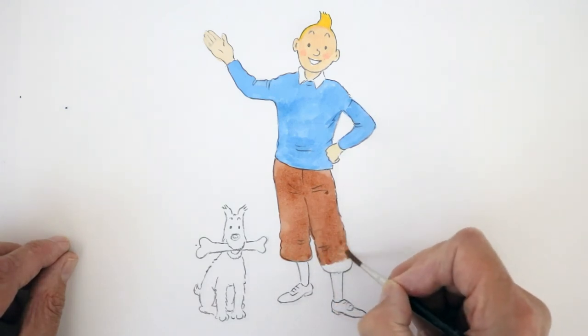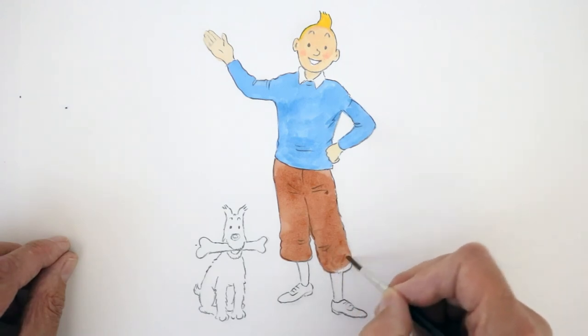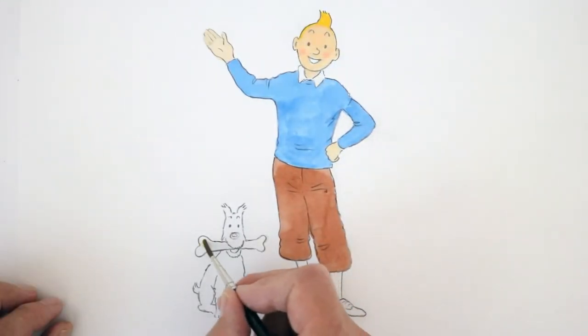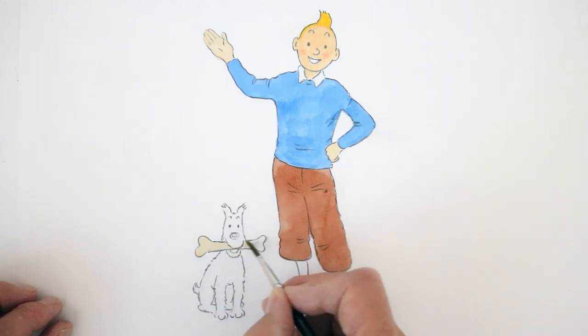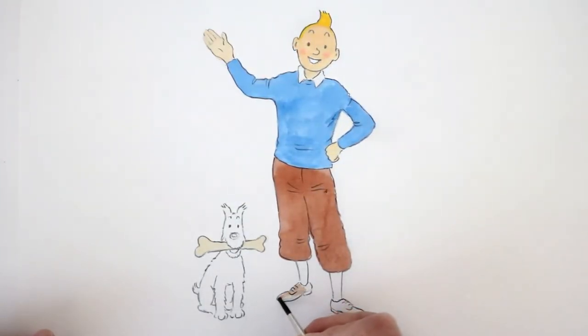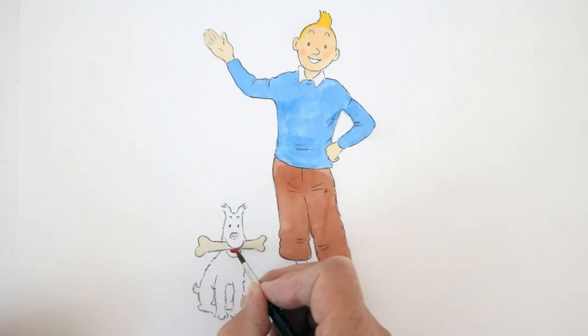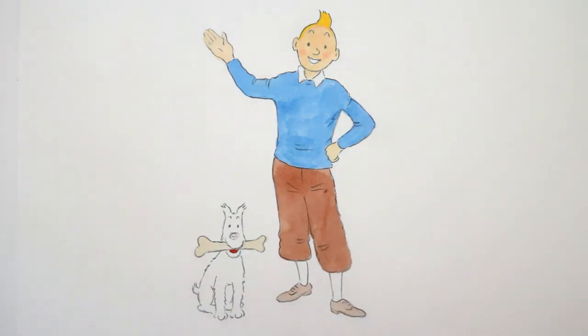Move on to the last couple of bits to do now, and those are the shoes and Snowy's bone. The bone is a kind of ivory color like that. And the shoes, this kind of brown color like that. One last little thing to do, and that is the inside of Snowy's mouth with a little bit of red.